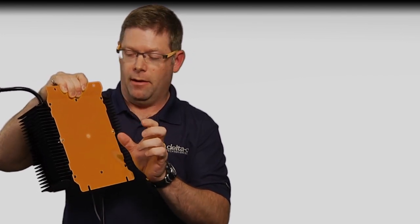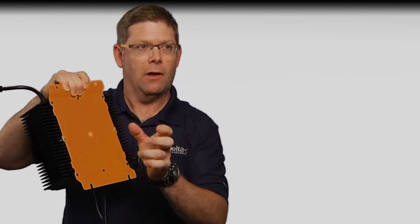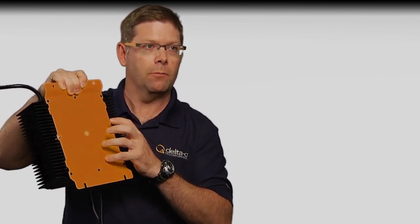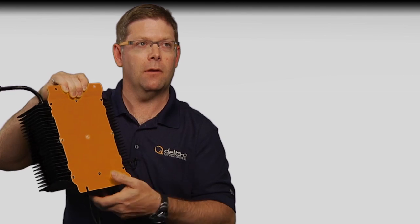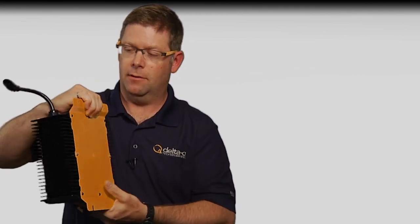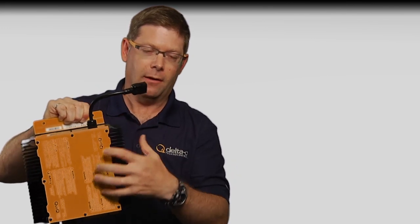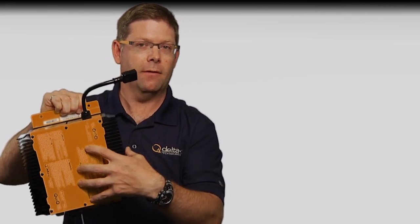That gore vent allows air to equalize or pressure to equalize in and out and helps reduce condensation and pressure from building up inside of the unit. But it keeps the unit sealed and the lid and the base plate and everything else has gaskets around it to keep it sealed.